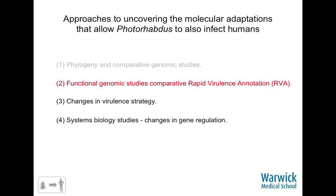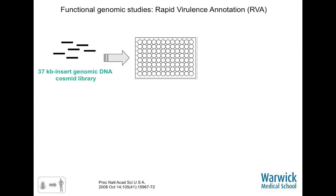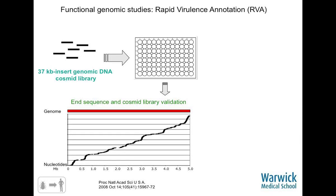We thought, okay, how can we see the functional differences? So we developed something called rapid virulence annotation — a quick and dirty approach, but it works. You take a large-insert cosmid genome library of your pathogen, Photorhabdus, array them all into microtitre plates, and at great cost and effort at the Sanger, end-sequence each cosmid clone, then map them back onto the genome to make sure coverage is good. There are always gaps and unclonable regions, but for an average library of 16 plates, that's pretty good coverage.